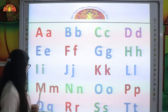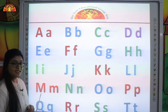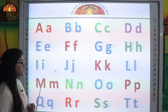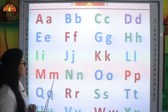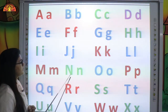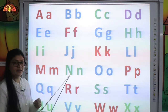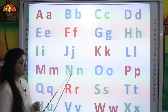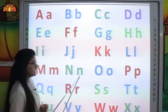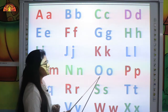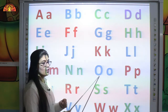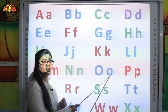Now next, which letter is this? This is uppercase letter M. This is lowercase letter M. This is uppercase letter N. This is lowercase letter N. This is uppercase letter O. And this is lowercase letter O.